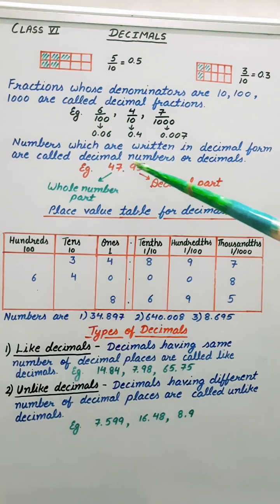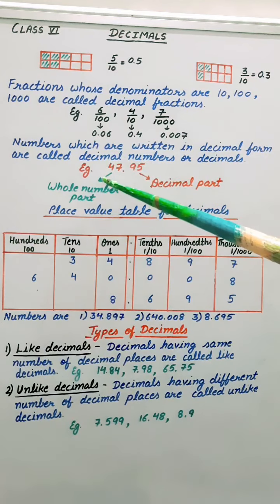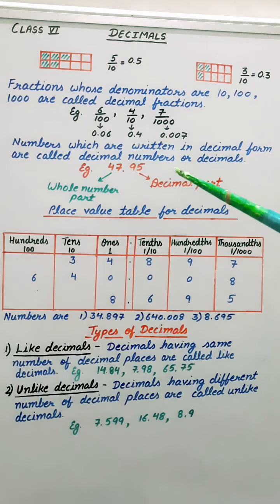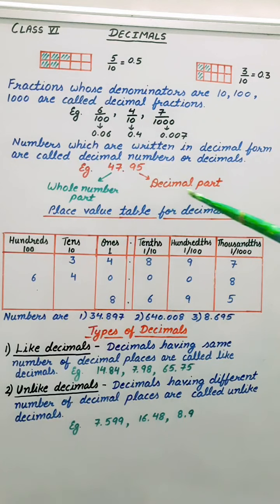Let's see one example. 47.95. This part before this decimal is called as whole number part and after the decimal it is called decimal part.